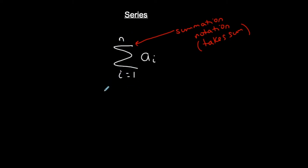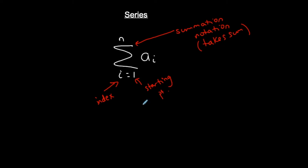Underneath the summation notation you'll see a letter — i, j, k, or different letters. That doesn't matter; it's just called the index. It tells you the variable you're using and where you're starting — this is your starting value or starting point. And up top is the last term in your series, the ending point, or the nth term.